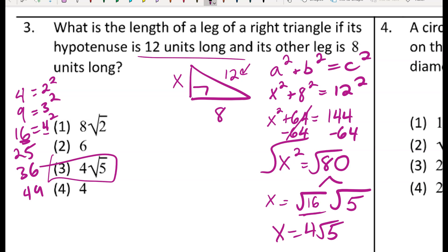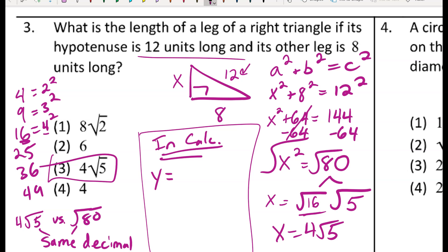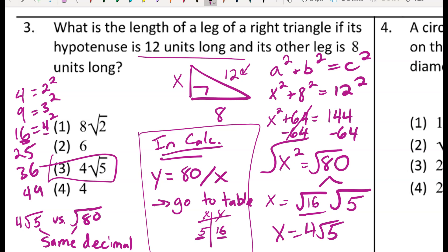A quick check: 4 radical 5 and radical 80 should give the same decimal value in your calculator, since all I did was simplify. Also, a calculator tip: if you're having trouble factoring 80, go into Y= and type 80 divided by x, then check the table to find which factor pair includes the biggest perfect square. You'll see 5 and 16, confirming 5 times 16 equals 80.